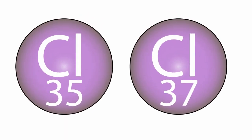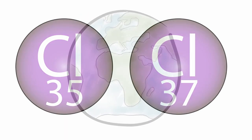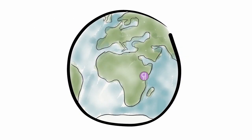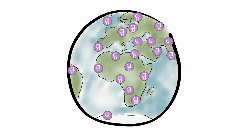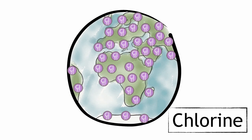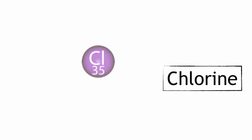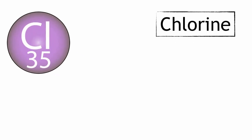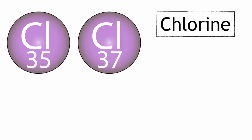We must remember that isotopic forms of elements have different values for their naturally occurring abundance on Earth. For example, looking at the isotopic forms of chlorine: some chlorine atoms have a mass of 35, and some have a mass of 37.